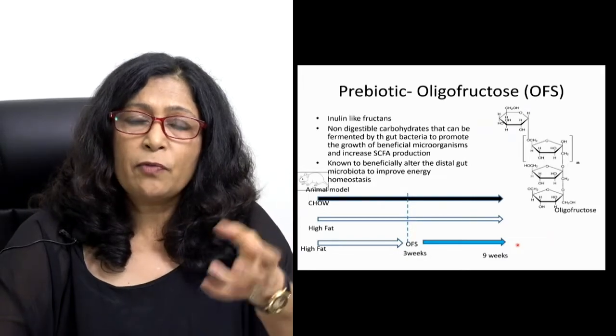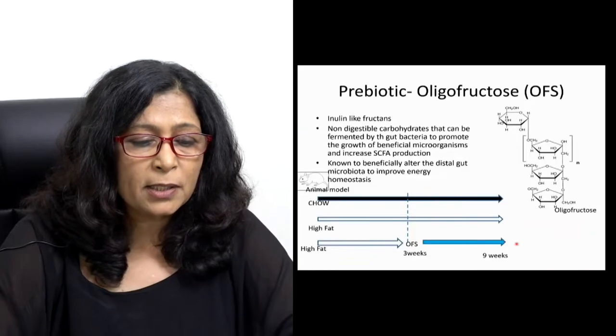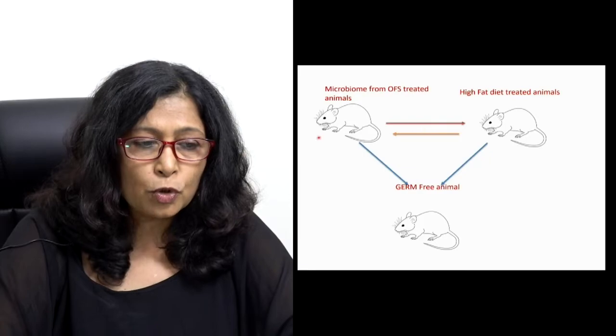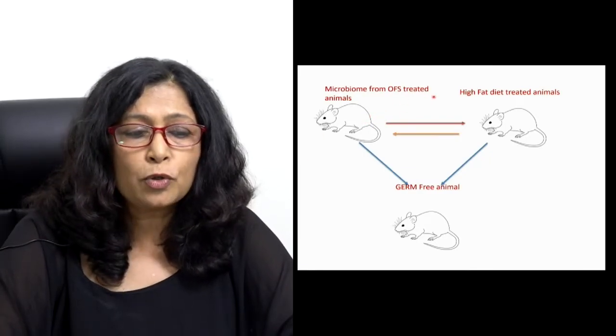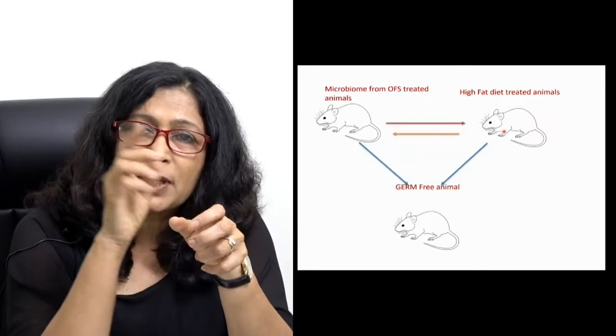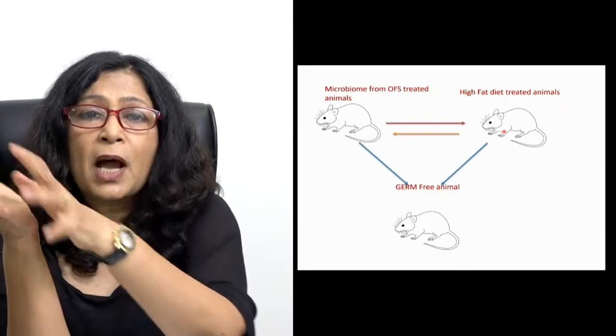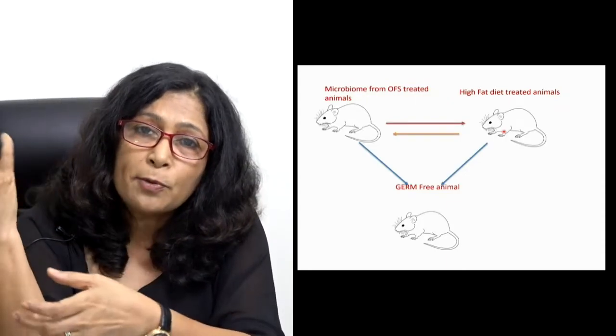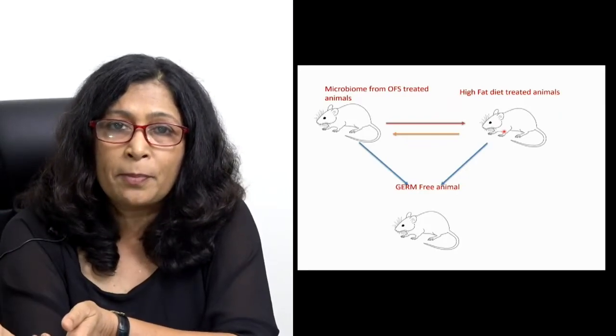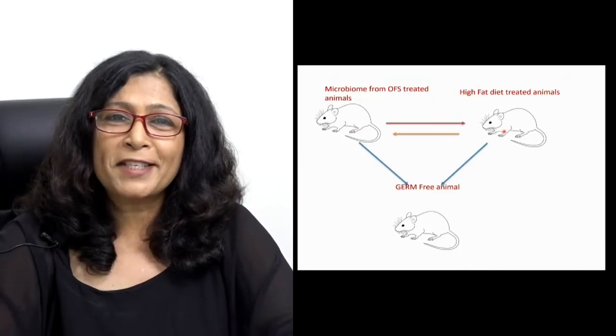It's a big, nice study with many parts. What they did was switch microbiota from the OFS-fed animals to the high-fat diet fed animals. When the good microbiota created by OFS in these mice shifted to mice treated with high-fat diet, improvement was seen which was not seen with high-fat diet alone. More GLP-1 was produced when these microbiota were shifted to these animals.